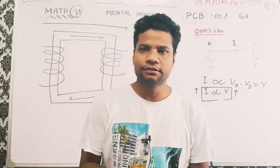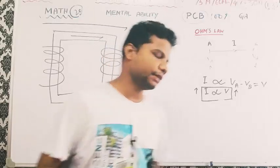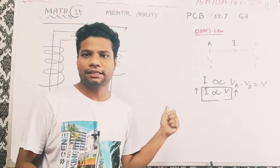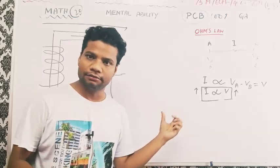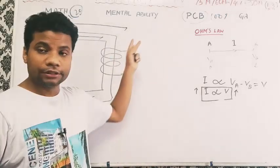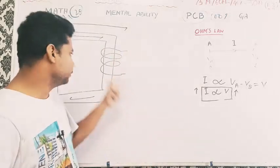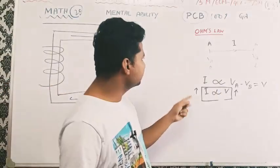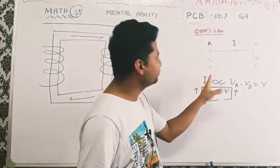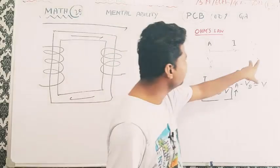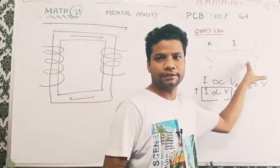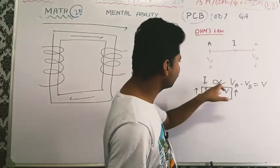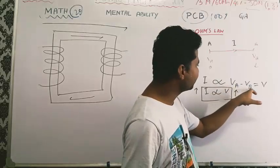This is a doubt clearing video. The doubt is that in a transformer, the voltage is less than voltage and the current is related to voltage. The ohms flow is related to voltage, with single conductors VA and VB. VB is the current flow and I is proportional to VB.